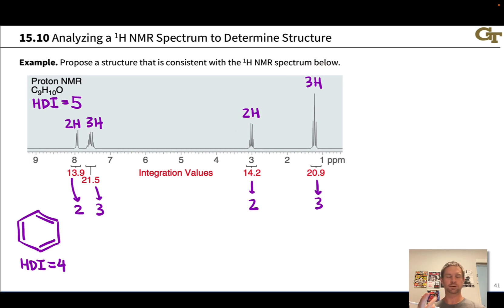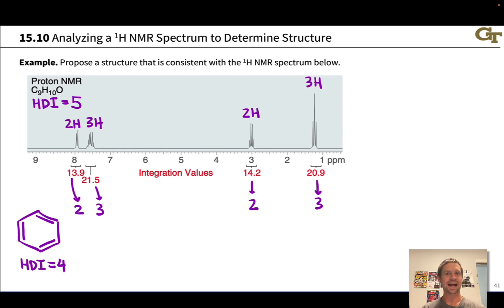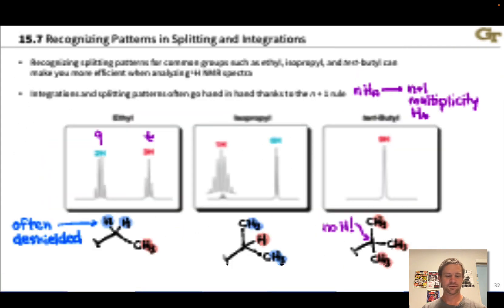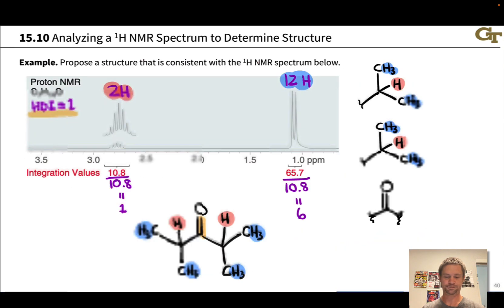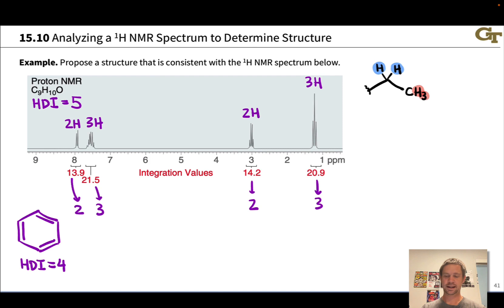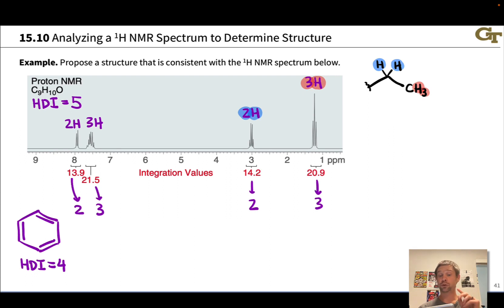If we had coupling constants, we could verify this — the spacing between the subpeaks is identical between these two sets of peaks, suggesting they are connected to each other. The chemical shifts suggest we're looking at an ethyl group here. Rolling back to our common structures found in organic molecules, we have the classic deshielded 2H quartet and shielded 3H triplet corresponding to an ethyl group. So that's going to show up in our structure, and we've now accounted for 2 more carbons.